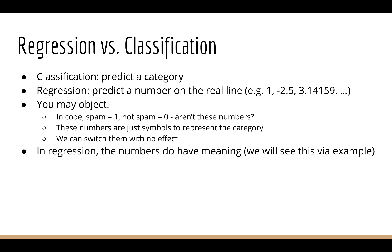But you might object here and say, well in the code, spam was 1 and not spam was 0. But in actuality, that doesn't matter. These numbers are just symbols to represent the actual category. We could just as easily make spam 0 and not spam 1. The results would be the same. In regression, the numbers actually do have meaning. In the next few examples, we'll see how this is the case.